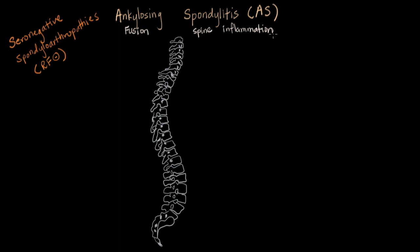Speaking of the immune system, the other buzzword you need to know is HLA-B27. It's part of the immune system — it's an antigen on the surface of the cell that can be recognized by T cells, which can recruit things to attack it. So this is the autoimmune component of the disease. This HLA-B27 association actually exists for the seronegative spondyloarthropathies in general, but here in particular for AS, you should remember that connection.